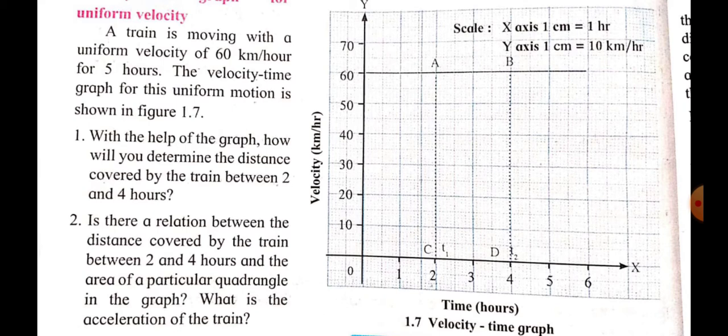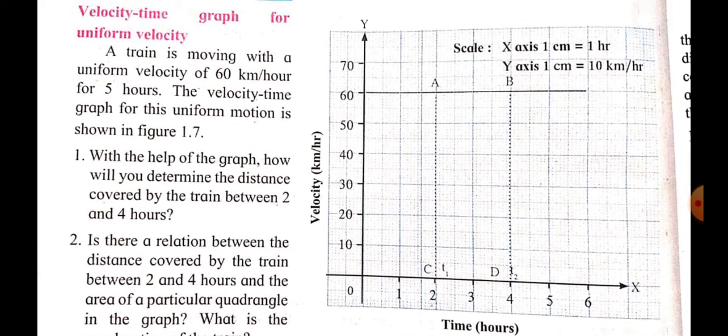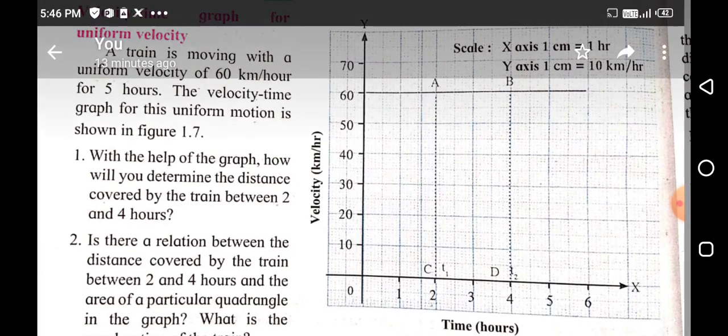There is no decrease or increase in the velocity of the train — the train is moving with uniform velocity, so the acceleration of the train is zero. We have now completed the topic of velocity-time graph for uniform velocity. Please share this video with your friends and subscribe to the channel. Thank you.